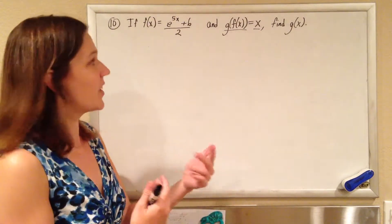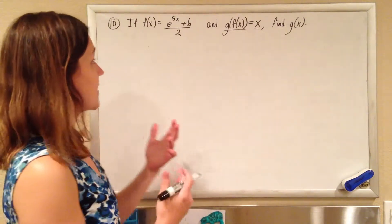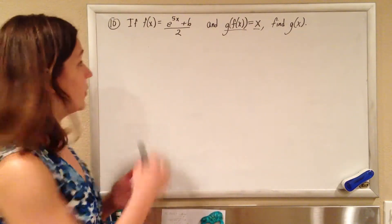So g and f must be inverses, and we know how to find an inverse, we're just going to do a switch and solve. So all this problem boils down to is a switch and solve, finding the inverse of f of x.